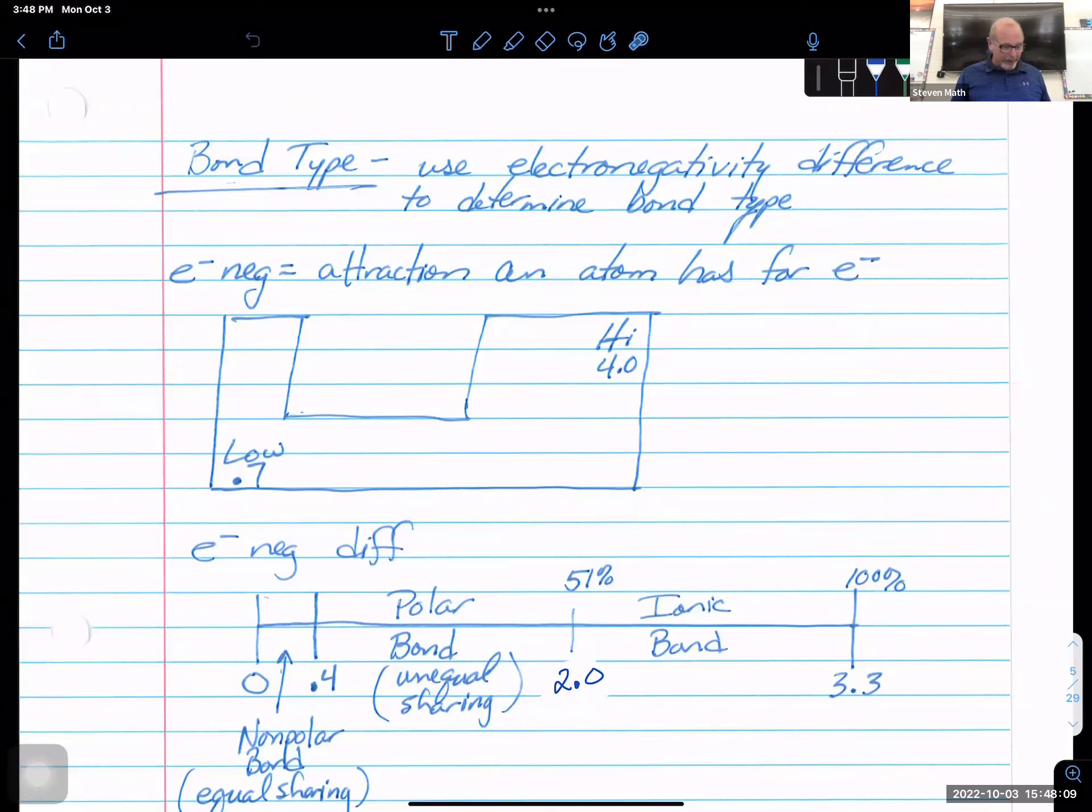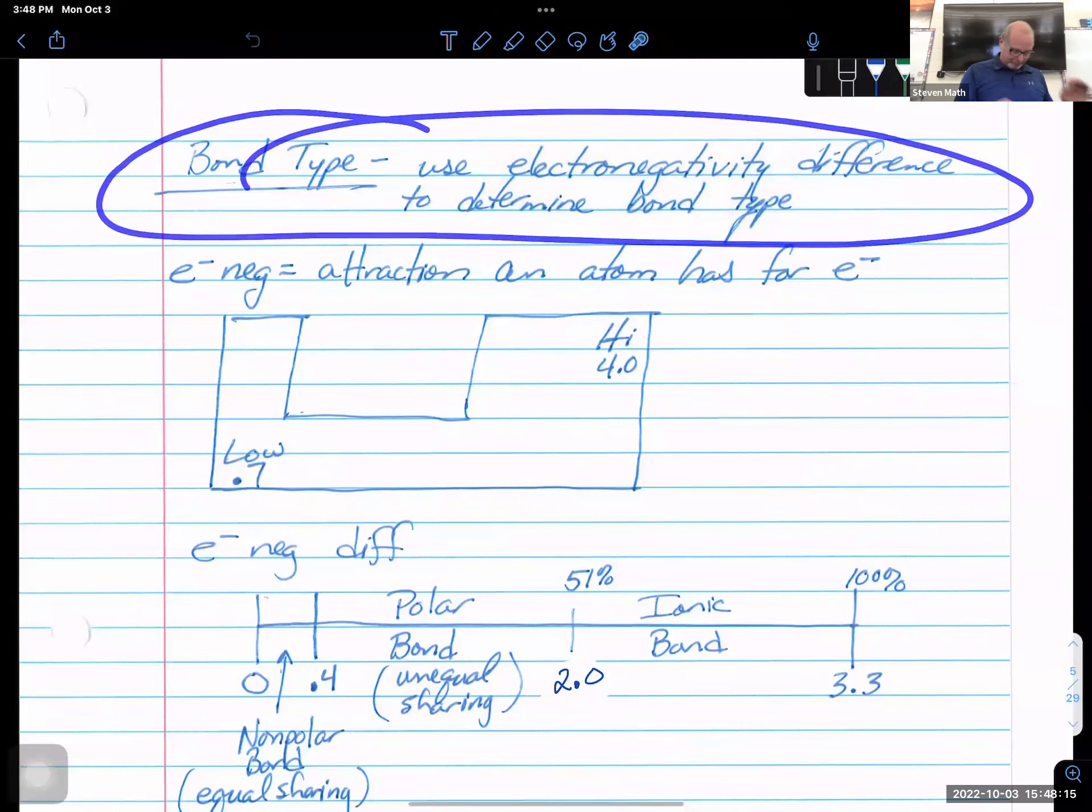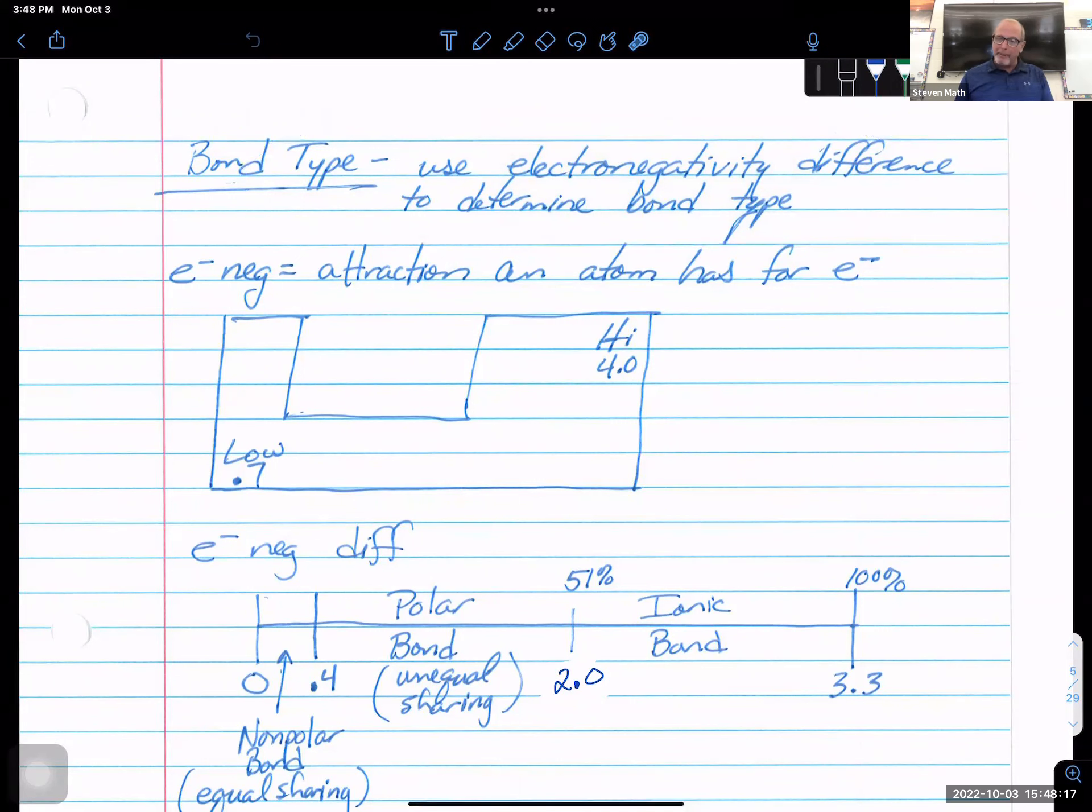The way we find out if we have covalent is to look at the bond type. And so to figure out the bond type, we're going to use an electronegativity difference scale. And the electronegativity values are not given on the board exam.